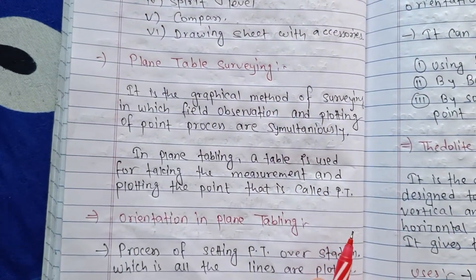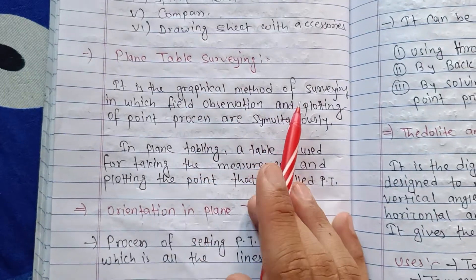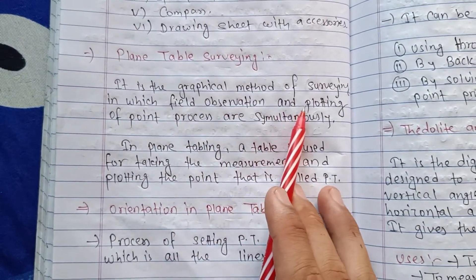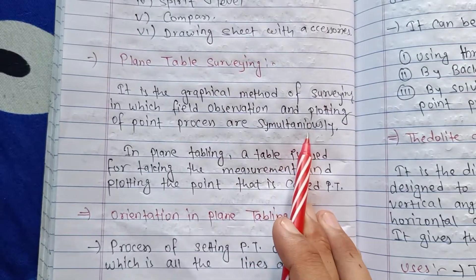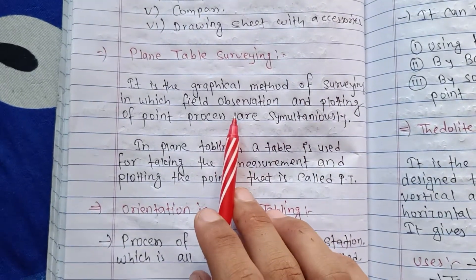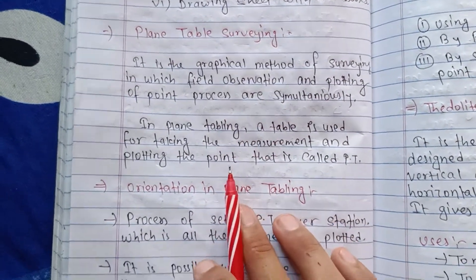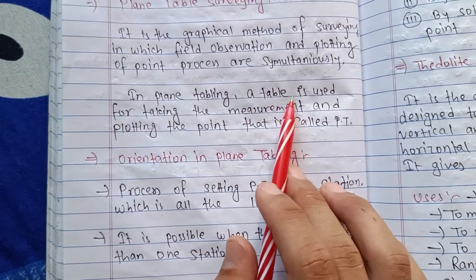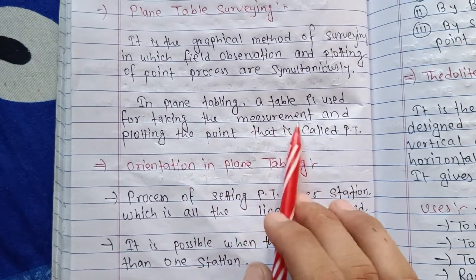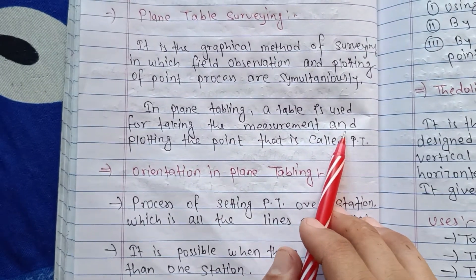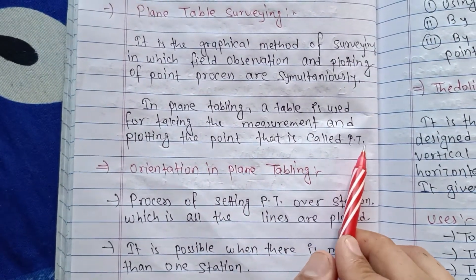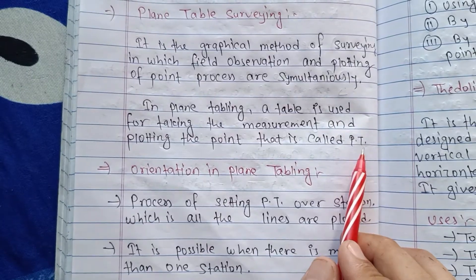Plane table surveying is the graphical method of surveying in which field observation and plotting of points are done simultaneously. A plane table is used to take measurements and plot the points — that is called plane table surveying.